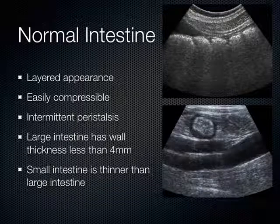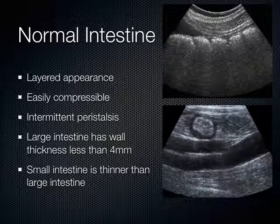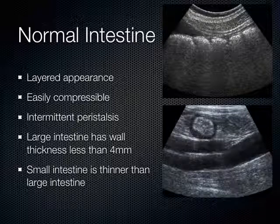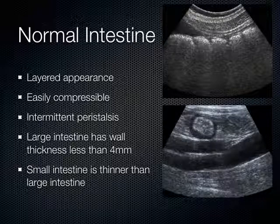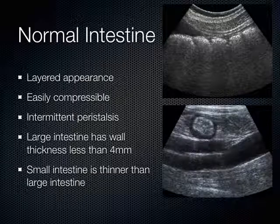Normal intestine looks like this — it has a layered appearance, is easily compressible, and should intermittently peristalse. Large intestine wall is less than 4 millimeters. Small intestine is somewhat thinner — probably closer to less than 3 millimeters, but definitely thinner than large intestine. On ultrasound the colon has that typical haustra, and the right hemicolon is usually filled with stool and gas, whereas the left hemicolon is usually in a somewhat contracted condition.